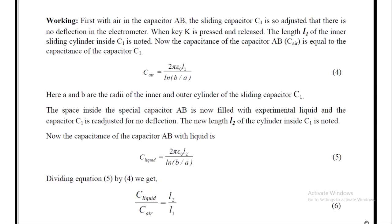Now we will see the working of this experiment. First, without filling any liquid into capacitor AB, the sliding capacitor C1 is adjusted so that there is no deflection in the electrometer when key K is pressed and released. The length L1 of the inner sliding cylinder inside C1 is noted. The capacitance of capacitor AB equals the capacitance of C1, so C_air = 2πε₀L1 / ln(B/A), where A and B are the radii of the inner and outer cylinders. For this initial adjustment, AB is kept empty, i.e., filled with air.